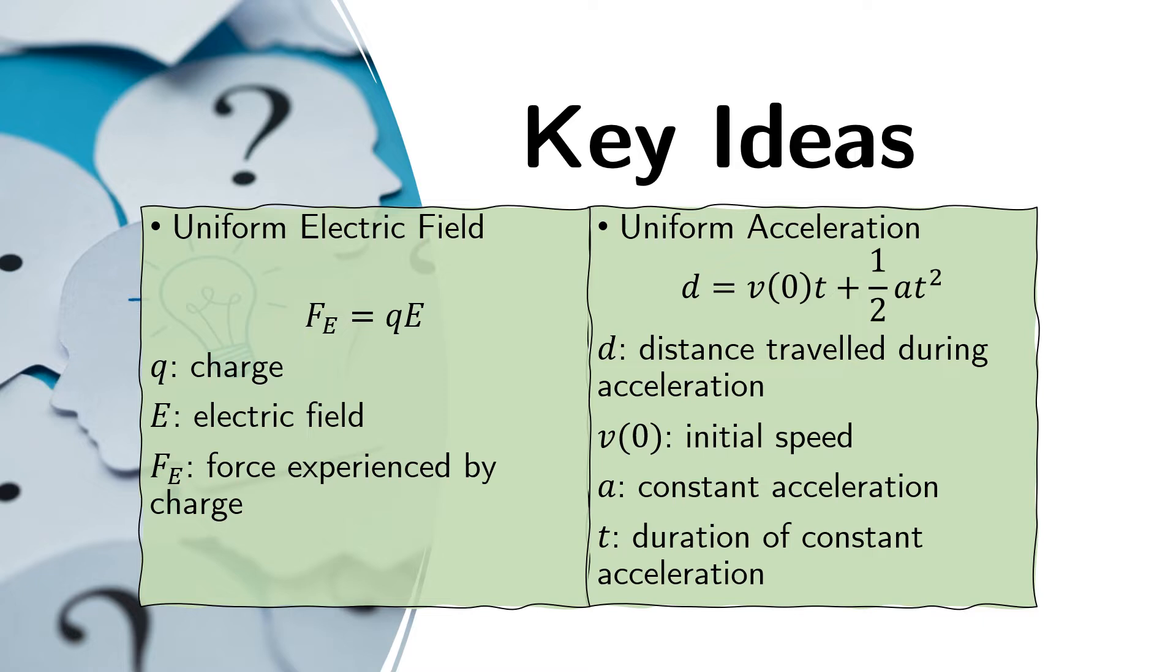Let us review the following ideas for the solution. First is the idea of the uniform electric field. The uniform electric field is the vector quantity that expresses the ratio of the force experienced by a charge Q when that charge is put in that electric field. So if we have a charge Q and then we put it somewhere where there is an electric field E,